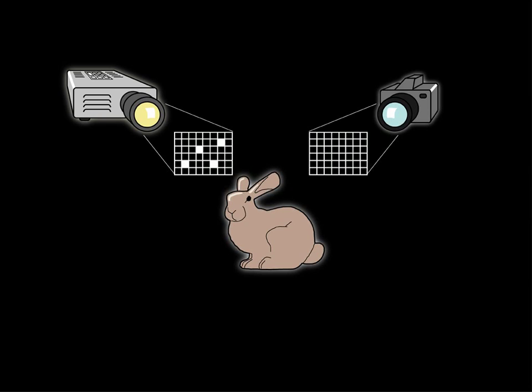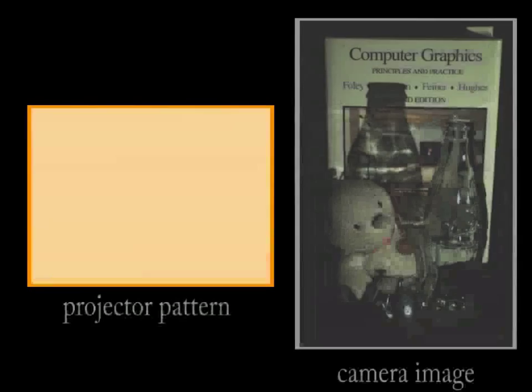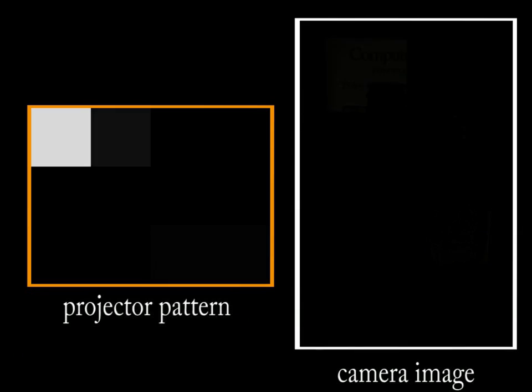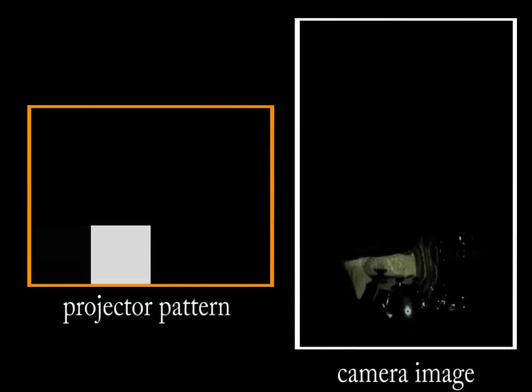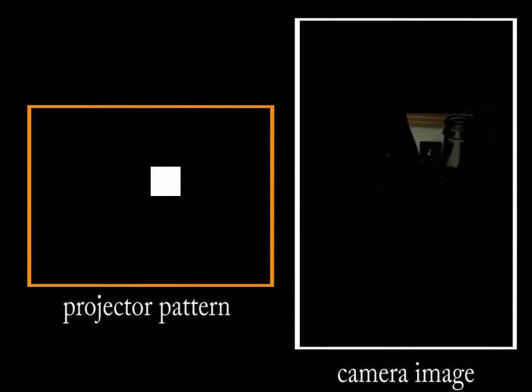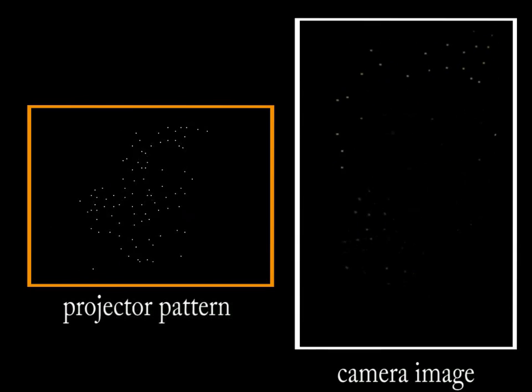To accelerate this process, we must identify pixels whose contributions onto the scene can be later separated and illuminate them in parallel. Our adaptive algorithm subdivides the projector image recursively to determine which pixels can be lit simultaneously. This allows us to capture the transport between a projector and camera significantly faster than with the brute force scan. On the left we show the projected pattern and on the right we show the image captured by the camera.